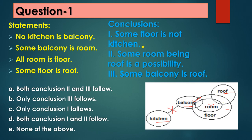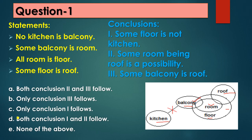Based on the diagram, Conclusion 1: 'some floor is not kitchen' — the floor and kitchen are completely different, so it is true. Conclusion 2: 'some room being roof is a possibility' — yes, it can be. Conclusion 3: 'some balcony is roof' — there is no connection between balcony and roof, so it does not follow. Conclusions 1 and 2 both follow, so the answer is option D.